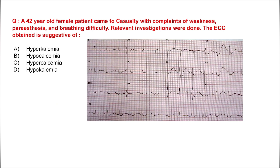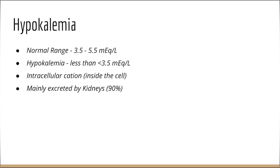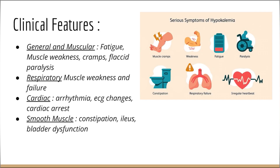Let us go through the topic quickly. The normal range of potassium is 3.5 to 5.5 mEq per liter; anything less than 3.5 is hypokalemia. Potassium is an important intracellular cation, present mainly inside the cell, and it is mainly handled by the kidneys.